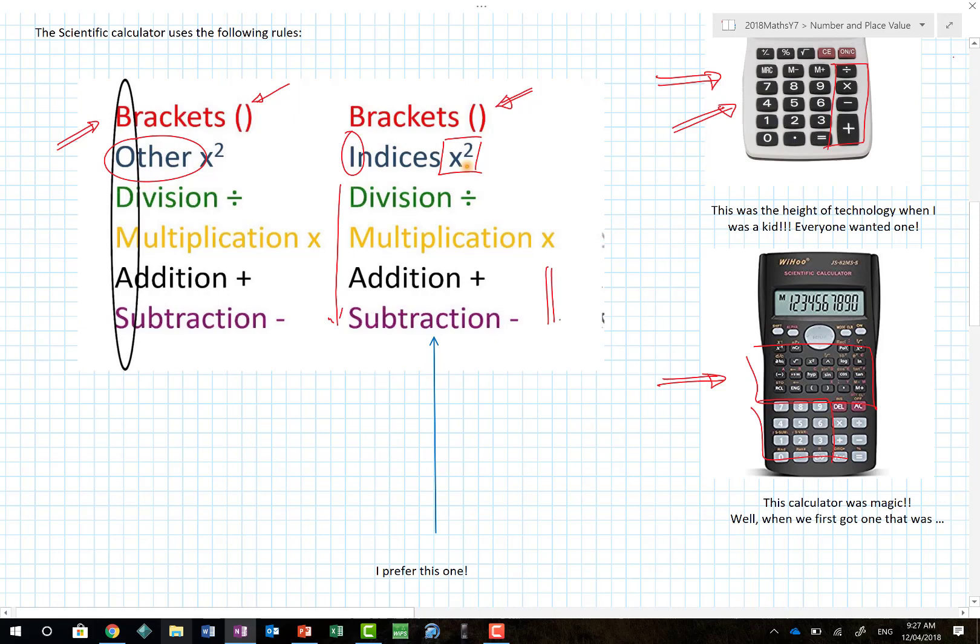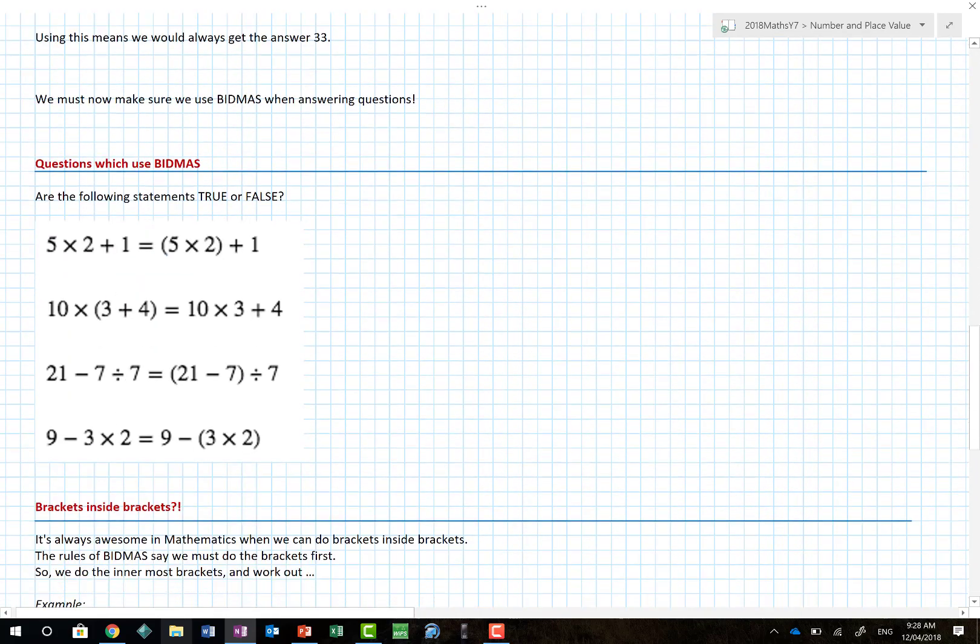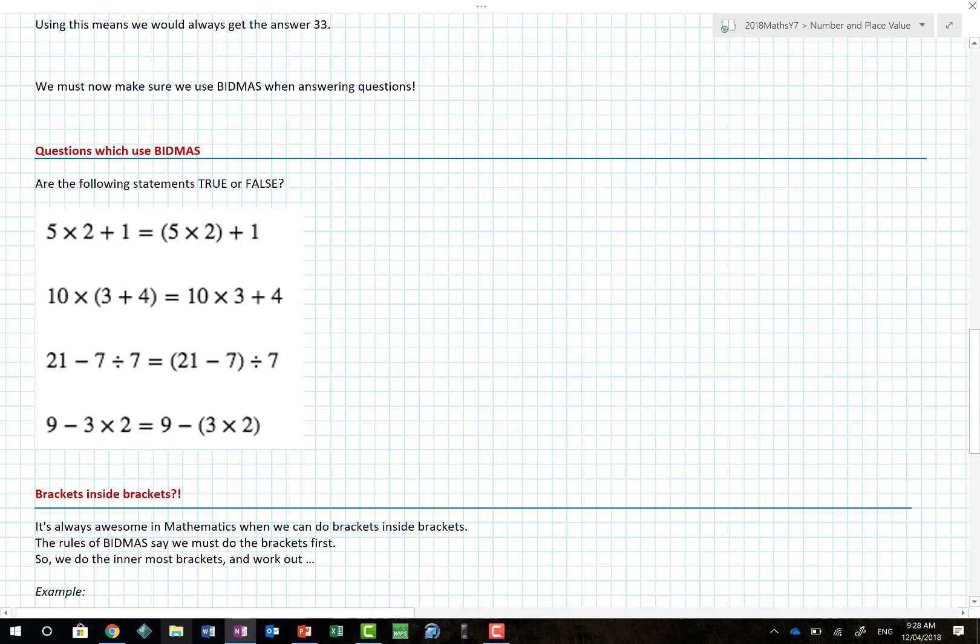Now by the time you get to addition and subtraction, my advice to you is the questions by the time you go down to there will just go left to right. So when you add and subtract just go from left to right. Do it as you would normally do. Please don't get all confused with BIDMAS. Possibly the most important thing here is the BID and the M. So using BIDMAS means we'll actually get the answer of 33.